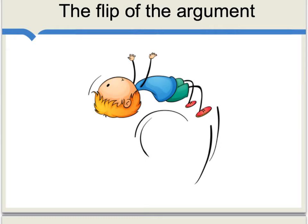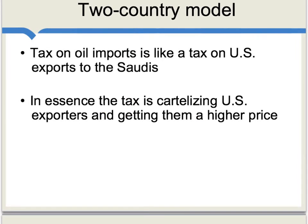Note also in international trade theory: anytime you have an argument about imports, you can flip it into an argument about exports, because in this two-country model, the trade going on is actually a form of barter. So you can also think of this tax on oil imports as being like a tax on U.S. exports to the Saudis. In essence, that tax is cartelizing the U.S. exporters and getting them a higher price, noting that the revenue from that higher price may be flowing to the U.S. Treasury rather than to the U.S. exporters themselves. That's simply the flip of the argument about the import tax.